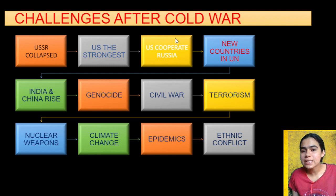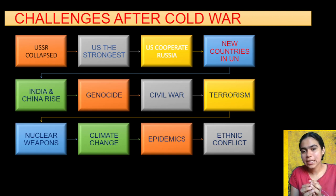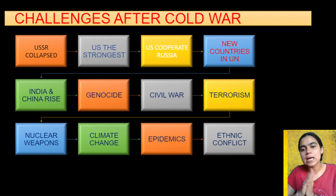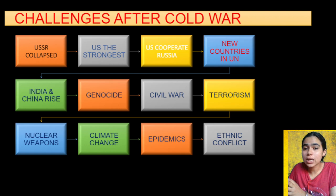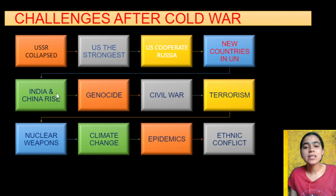The disintegrated countries started to become members of the UN. These new countries included those that were part of the USSR, and also Eastern European countries that were allies of the USSR. We remember that Western Europe was with the US, and Eastern Europe was with the USSR. So the Eastern European and Russian parts started coming into the UN. Then India and China, along with countries from Asia and Africa, emerged as important powers.